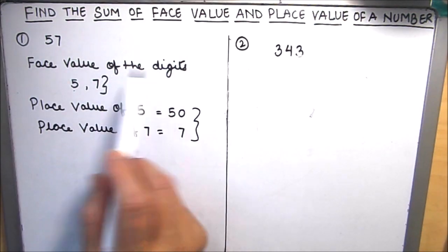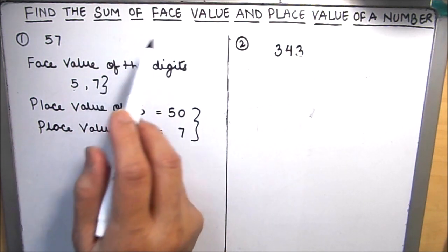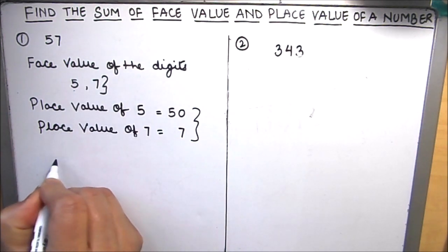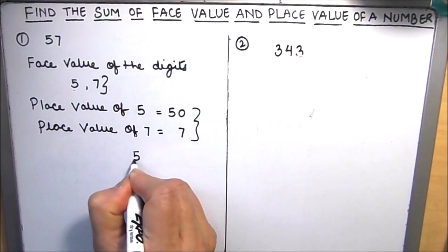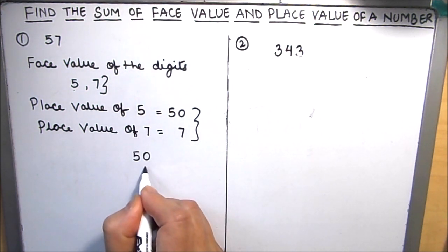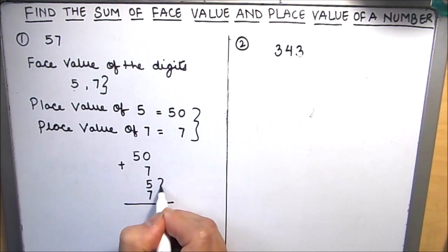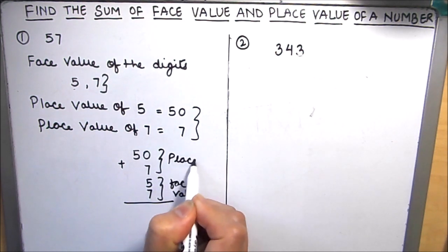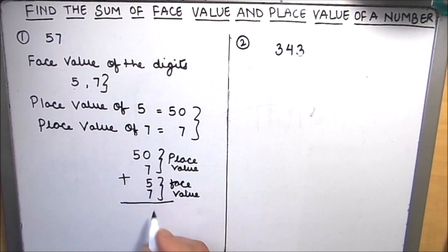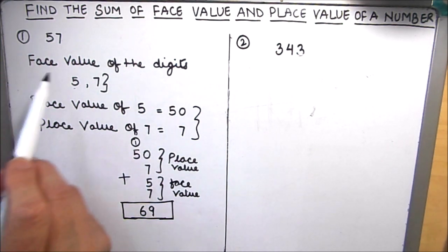In 57, the face values of the two digits are 5 and 7, and the place values are 50 and 7. Now we have to find the sum of the face value and place value of the digits: 50 plus 7 plus 5 plus 7. The sum gives us 69. So the sum of the face value and place value of the digits in 57 is 69.